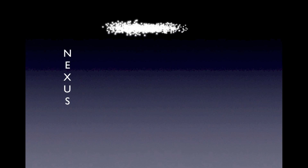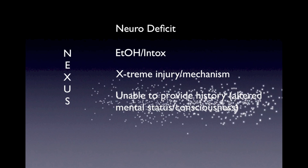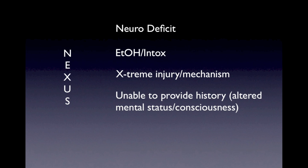My mnemonic for NEXUS is NEXUS itself: N for Neurodeficit, E for ETOH, X for Extreme Injury or Mechanism, U for Unable to Provide History due to altered mental status or consciousness, and S for Spinal Tenderness in the Midline.